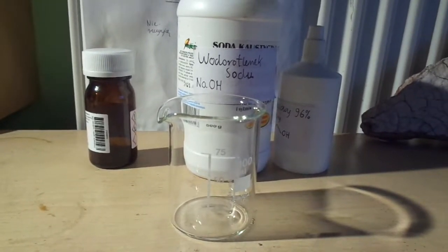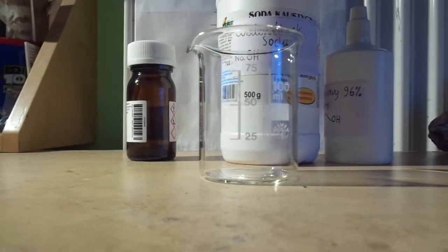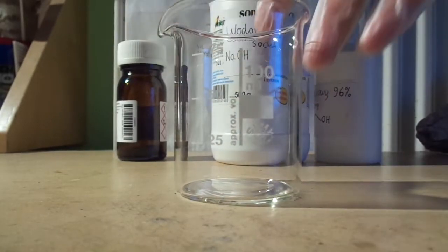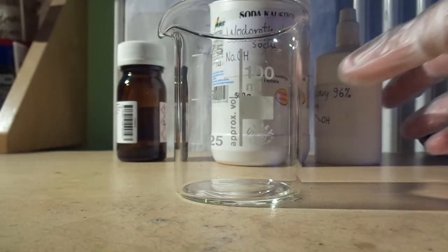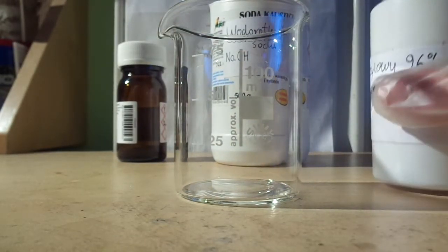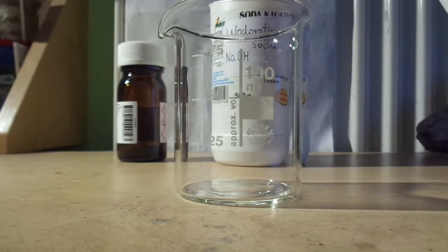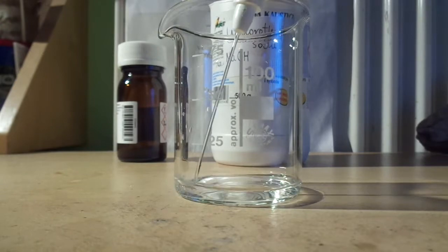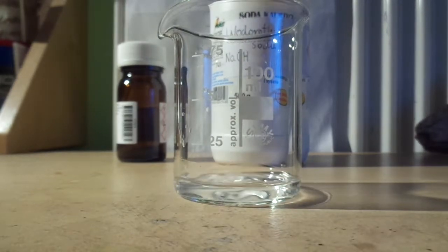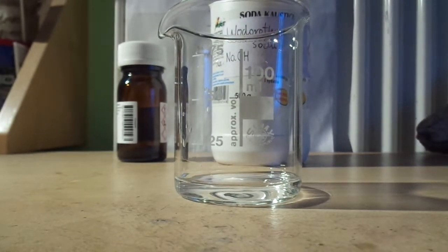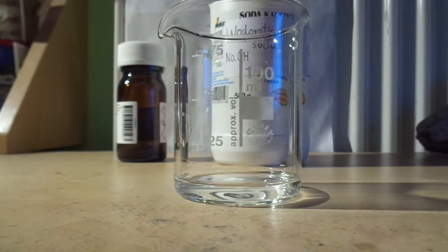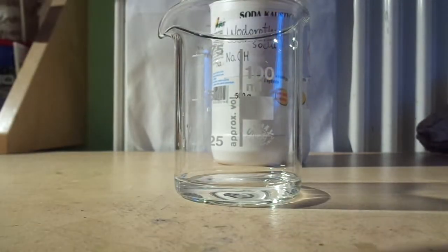Today I'm going to make iodoform, which is an organic compound of iodine. To make it, you first need to dissolve some iodine in ethanol. I'm just going to take some ethanol, this is 96%, so I'm basically going to make a tincture.